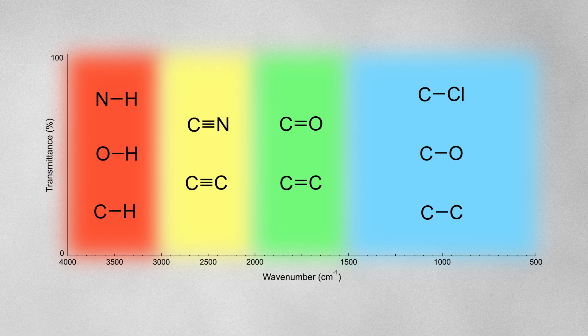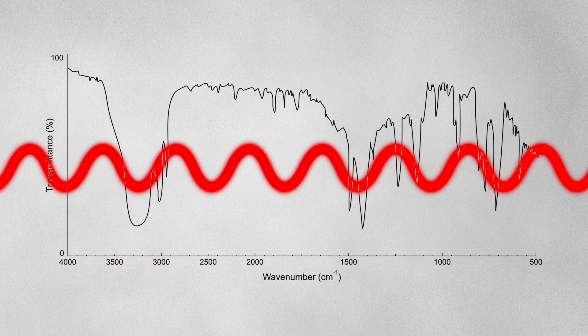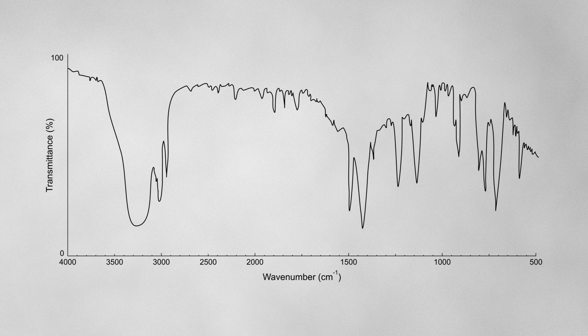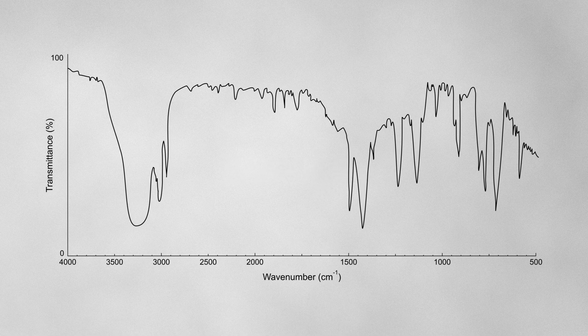So, we've talked about what determines the position of an absorption band. Now, let's talk about the factors that influence what the absorption band looks like. Different bonds can absorb different amounts of IR radiation, so their absorption bands can have different intensities. A high intensity means the bond has absorbed a higher percentage of IR, and a low intensity means the bond has absorbed a lower percentage of IR. This is known as the strength of the absorption, not to be confused with the strength of the bond.